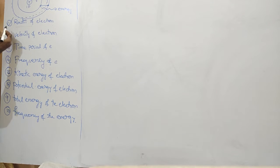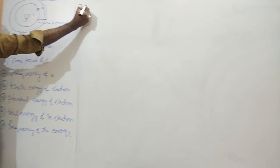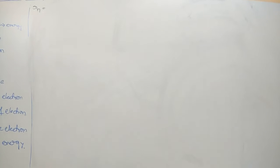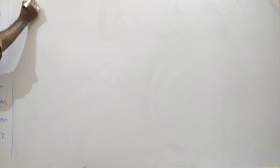Good morning friends. In the previous class we already calculated the radius of the electron in the nth orbit. That value is rn equal to n² h² ε₀ divided by π m e², which is the radius of the electron in the nth orbit in a hydrogen atom. If you did not understand this value, you can go through the last video we uploaded. That is the rn value.